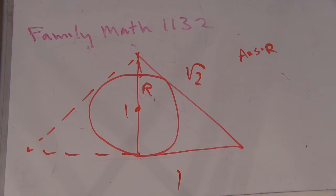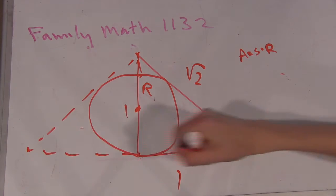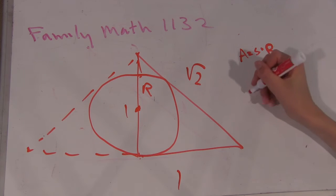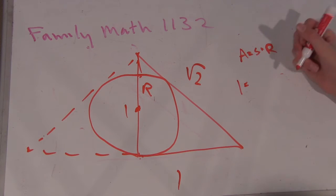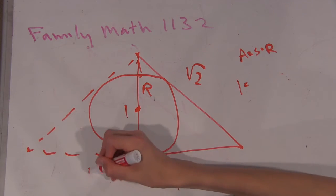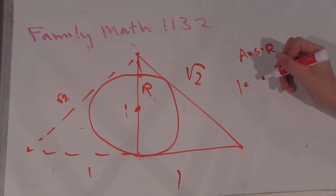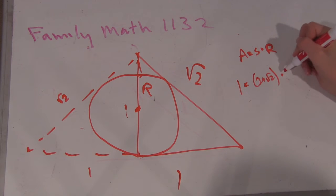Well, we know the area in this case because we know that this base is 2 and the height is 1, so then we know the area is 1. So we know that 1 equals, this is 1, this is root 2, 2 plus root 2 times this radius.